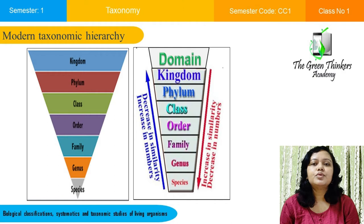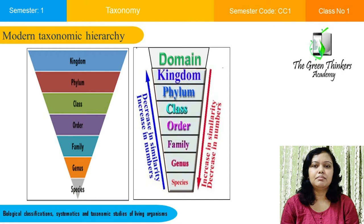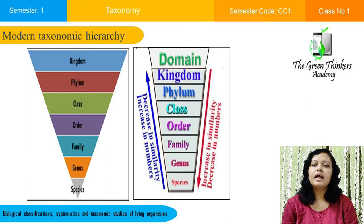Domains are the highest taxonomic rank in the taxonomic hierarchy; they were not used until 1990. Below domains is kingdom, which was the highest rank until domains were introduced — it is a group of closely related organisms. Next is phylum, which is more specific than kingdom. For example, in kingdom Animalia, there are almost 35 phyla present.